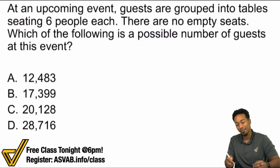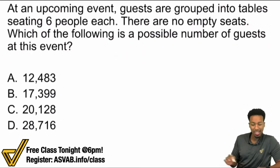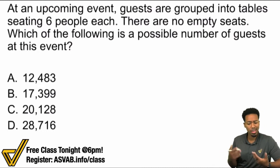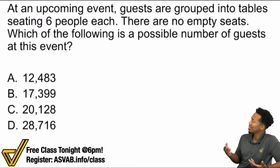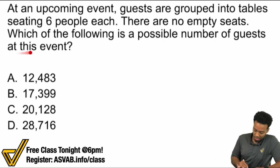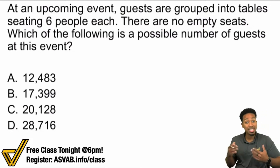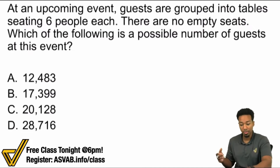Let's tackle this. So what we see here is we're being asked: which of the following is a possible number of guests at this event? Let's ask ourselves what's really going on here. We want the possible number of guests at this event, and it says at an upcoming event, guests are grouped into tables seating six people each. There are no empty seats — meaning there's exactly six people at every single table.